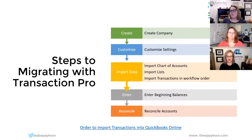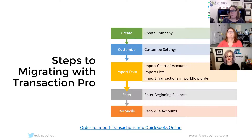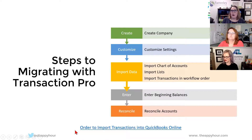The steps to migrating with Transaction Pro — there are guides on Transaction Pro's blog that will walk you through pretty much any question you have, with videos and all kinds of amazing stuff. First you're going to create the company — whether in desktop or QuickBooks Online — customize your settings, and then import your data. Really important: there's an order to import transactions, both into QuickBooks Desktop and QuickBooks Online. That order is made available to you on the website. Understanding the order you should be bringing data in is probably one of the most helpful resources out there.